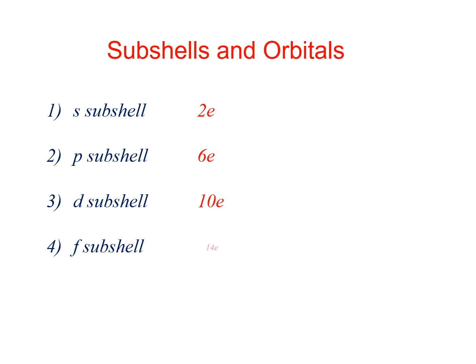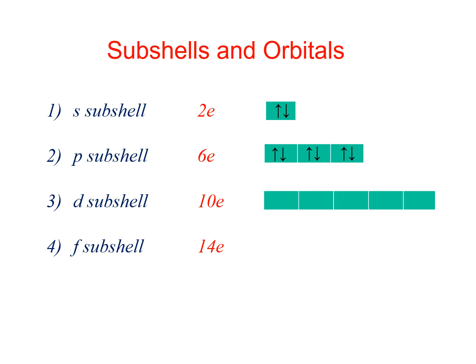The s sub-shell has one orbital. The p sub-shell has three orbitals: px, py, and pz. The d sub-shell has five orbitals: dxy, dyz, dxz, dx²−y², and dz². In each orbital, a maximum of two electrons can be accommodated. The f sub-shell has seven orbitals.